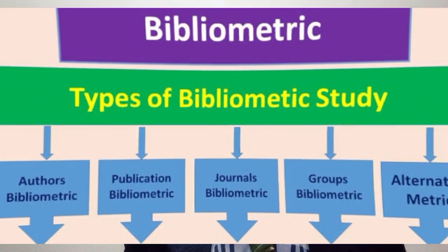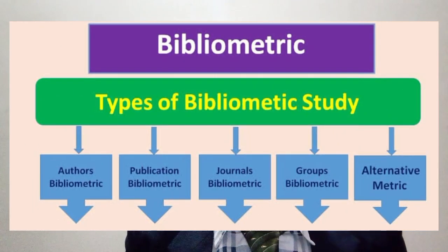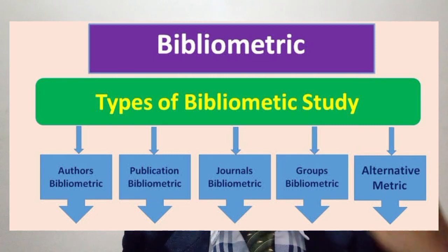Point number two: what are the different types of bibliometrics? There are five types of bibliometric analysis or studies conducted by researchers. These types are: number one, author bibliometrics; number two, publication bibliometrics; number three, journal metrics; number four, group metrics; number five, alternative metrics.